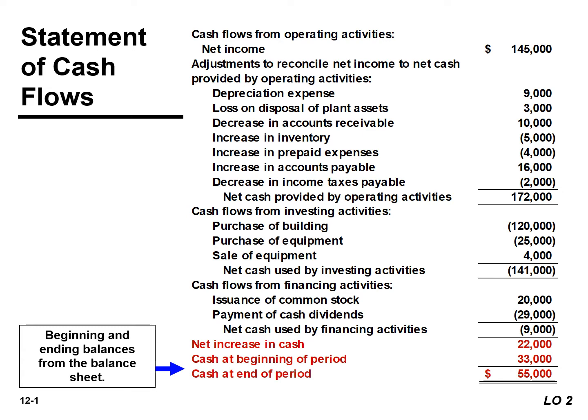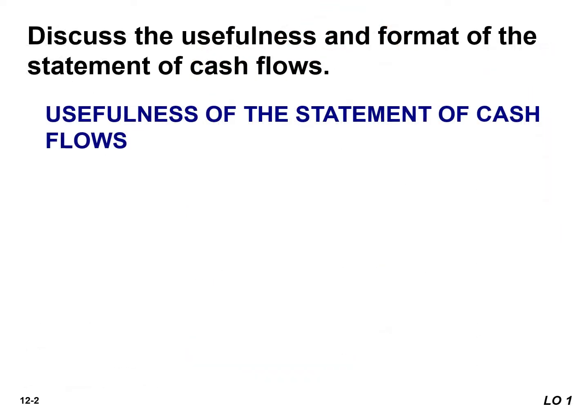The statement of cash flows reports cash inflows and outflows in three broad categories: operating activities, investing activities, and financing activities. It reports the cash receipts and cash payments from these activities during a period in a format that reconciles the beginning and ending cash balances.